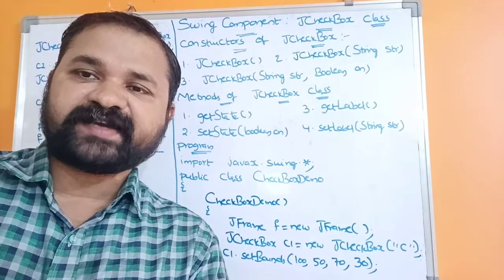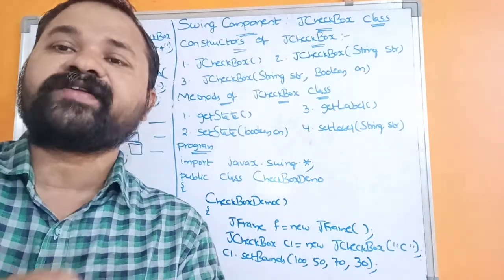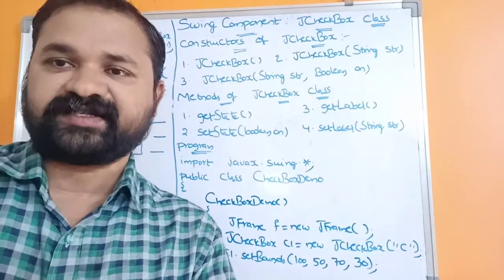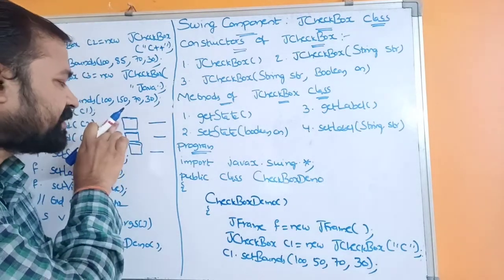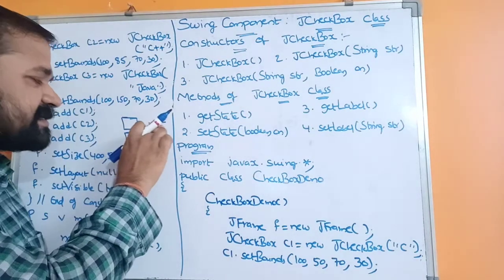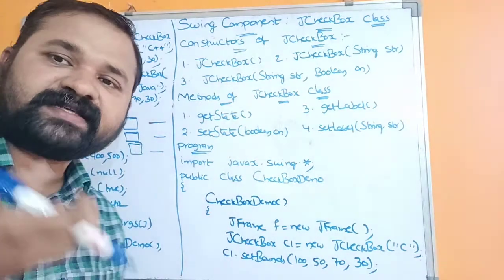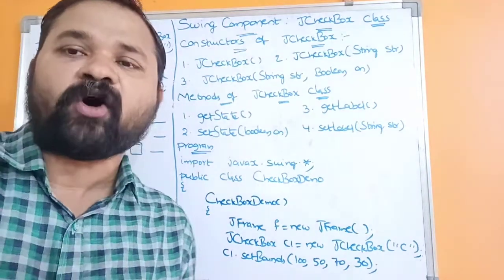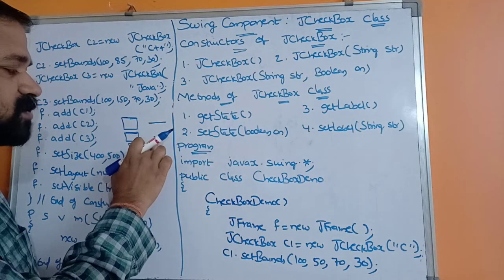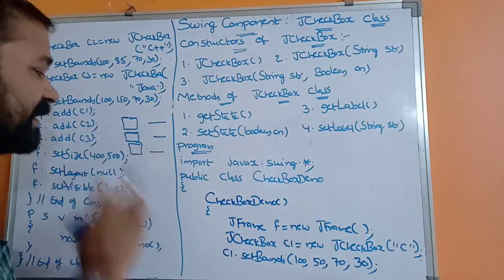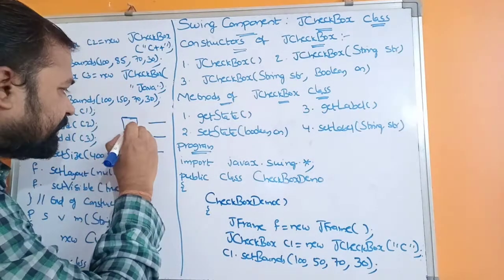In this video we are going to discuss the swing component JCheckbox class. Checkboxes are mainly useful in order to select multiple options. Generally a checkbox is represented with a small square. Every checkbox contains a label that provides information about the checkbox. The best example is 'select your hobbies' — the first checkbox label is playing cricket, the second is watching TV, and the third is reading books.